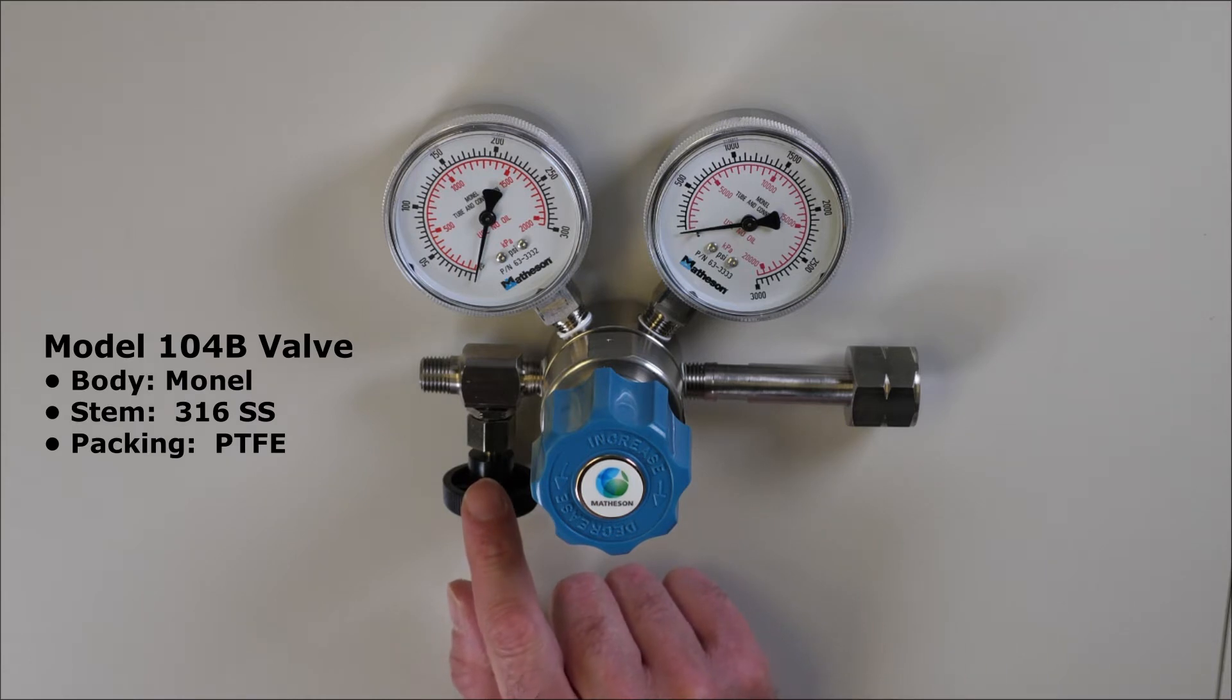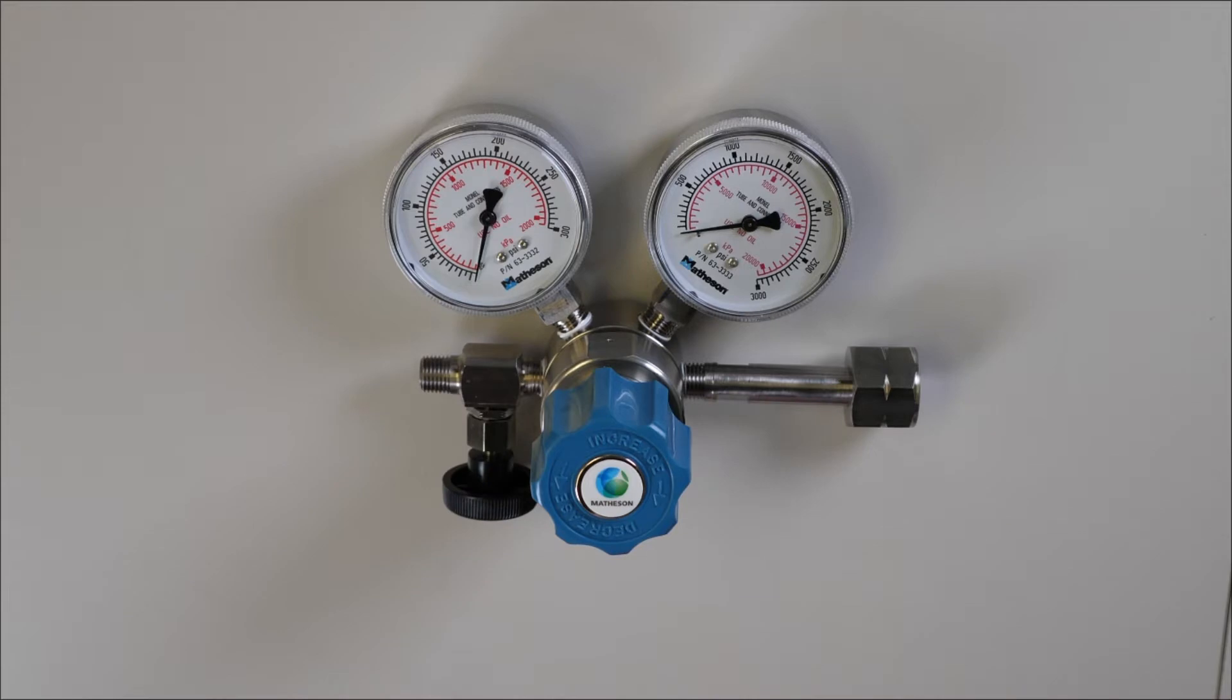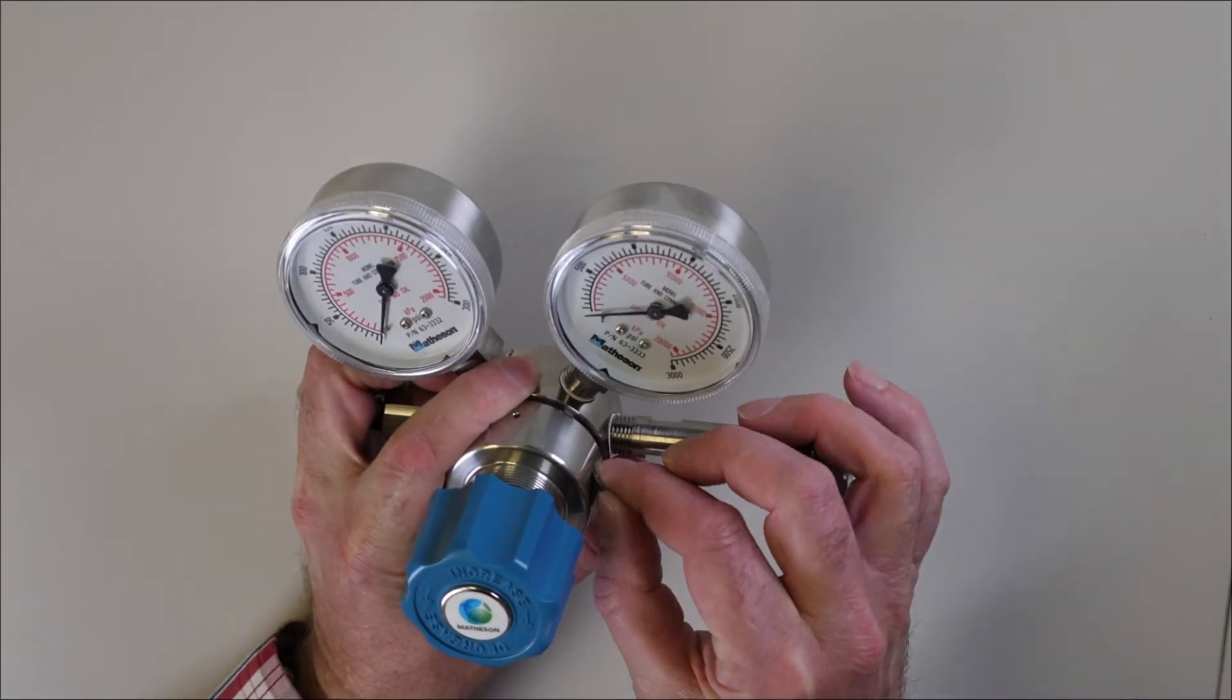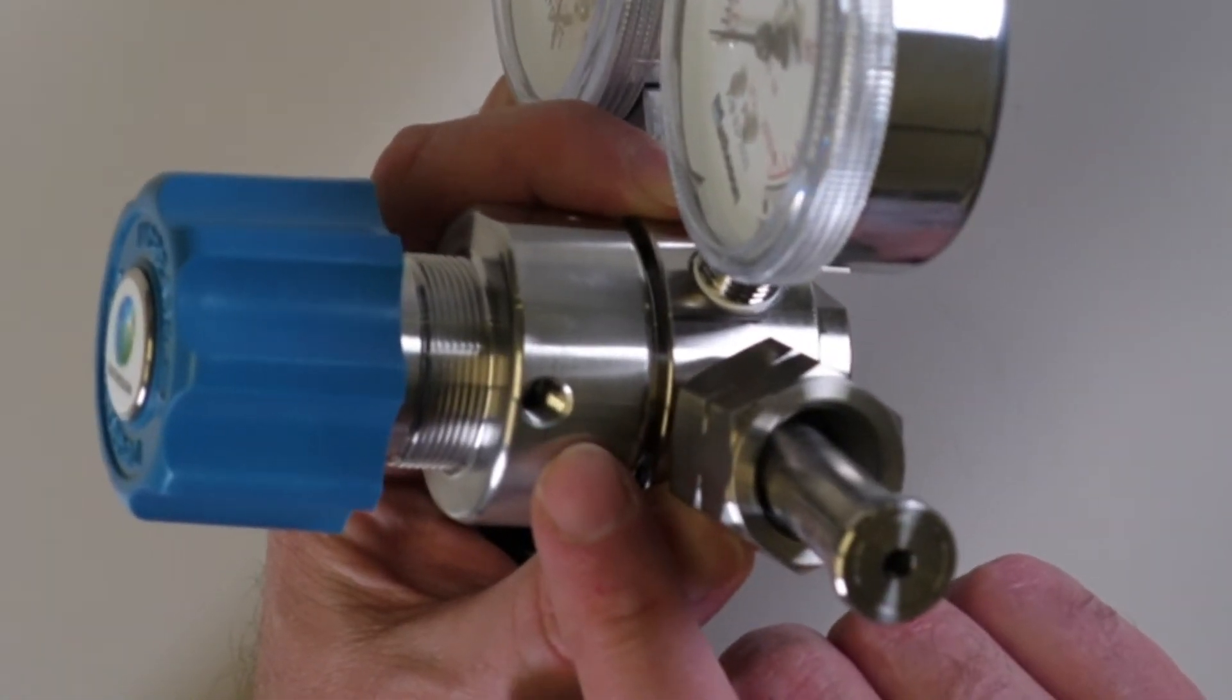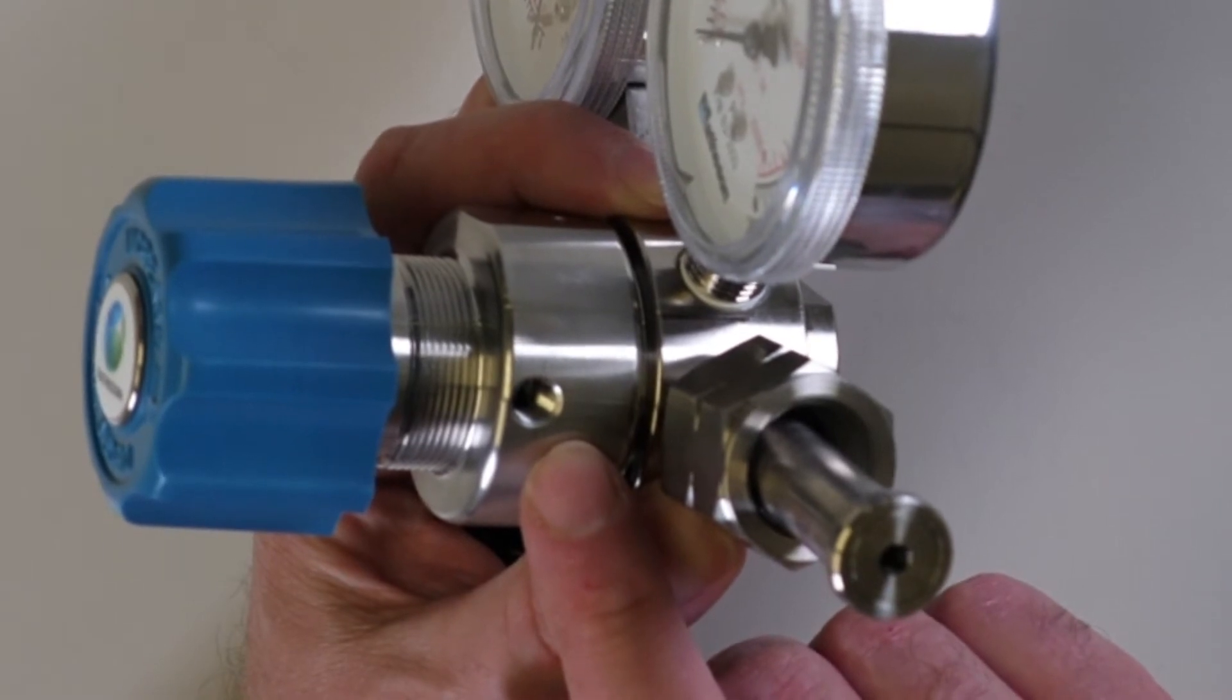The outlet needle valve has a quarter inch NPT male connection. The 1/16th inch NPT bonnet vent hole should never be plugged. It can be piped away to an exhaust system.